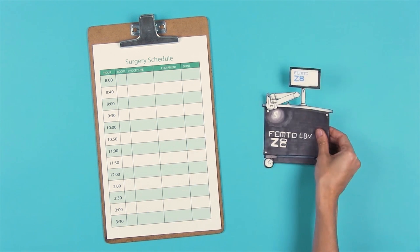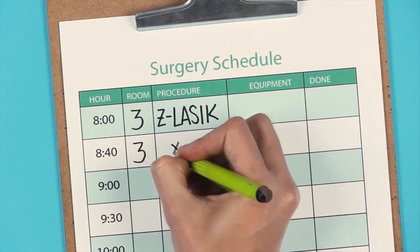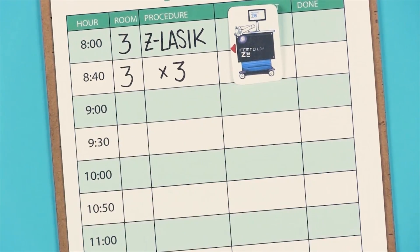We have three rooms, four procedures, and only one C8. So, from 8 to 8:40, we do three Z LASIK procedures at room 3.